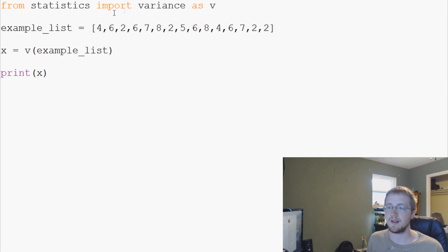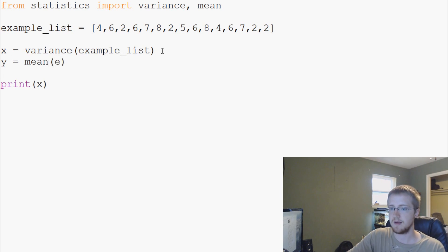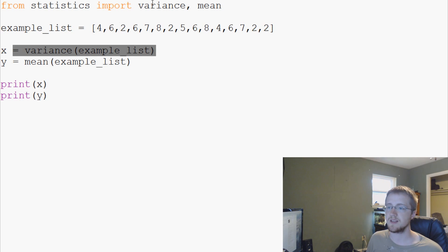Now the next thing that we want to do, let's say we want to import a few things from statistics, so variance and we want mean. So x equals variance example list, y equals mean example list, and then we'll have it print y.